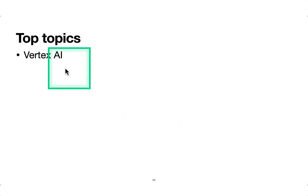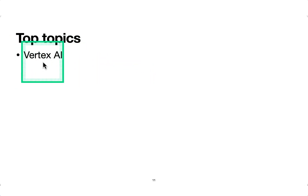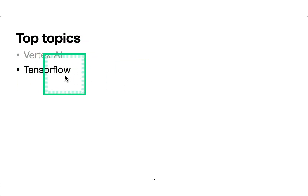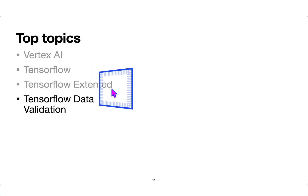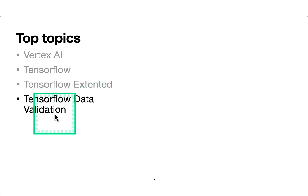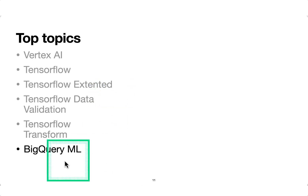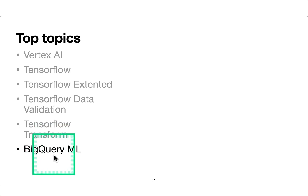Top topics: Vertex AI is the all-in-one solution for all machine learning needs on Google Cloud — you have to be very thorough with it, as it contains a lot of services inside. Then TensorFlow — make sure you're very comfortable with TensorFlow from an exam point of view. Then TensorFlow Extended, also known as TFX. TensorFlow Data Validation is part of TFX, as is TensorFlow Transform. Then BigQuery ML is also big in the exam — for anything where your data is in BigQuery or you need SQL, BigQuery ML would typically be the right solution.